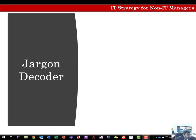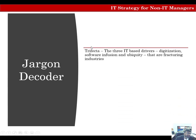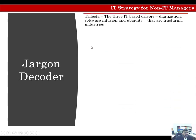We're going to discuss some terms and jargon which we'll use throughout this chapter and throughout the book. The first term is trifacta — three information technology-based drivers: digitization, software infusion, and ubiquity, which are disrupting the competitive landscape. We'll talk about what each one of them is in a minute.